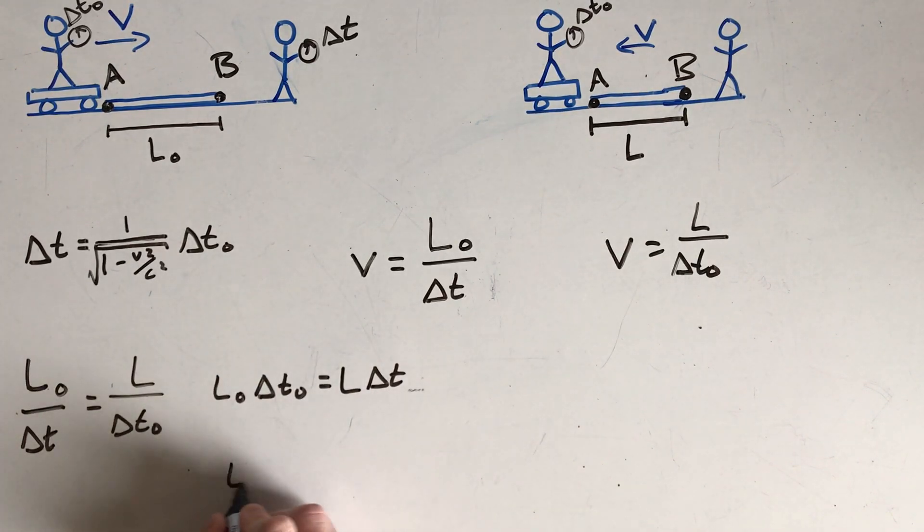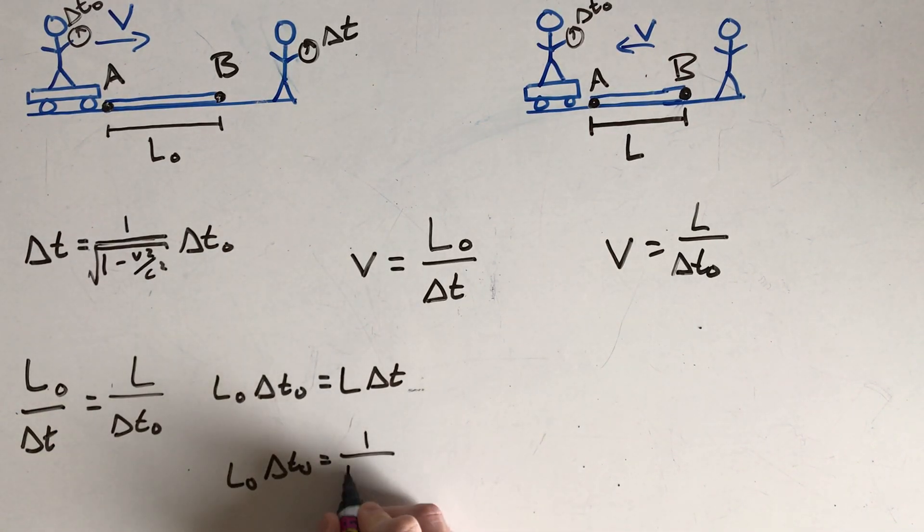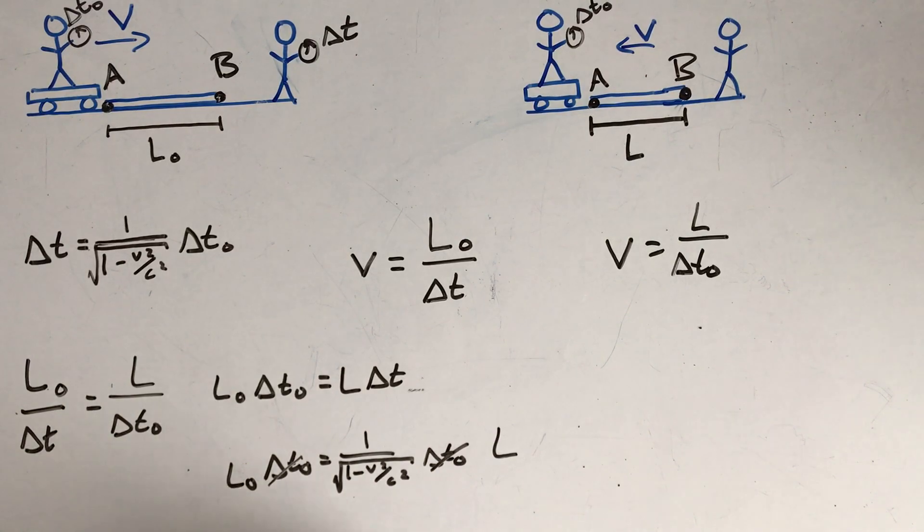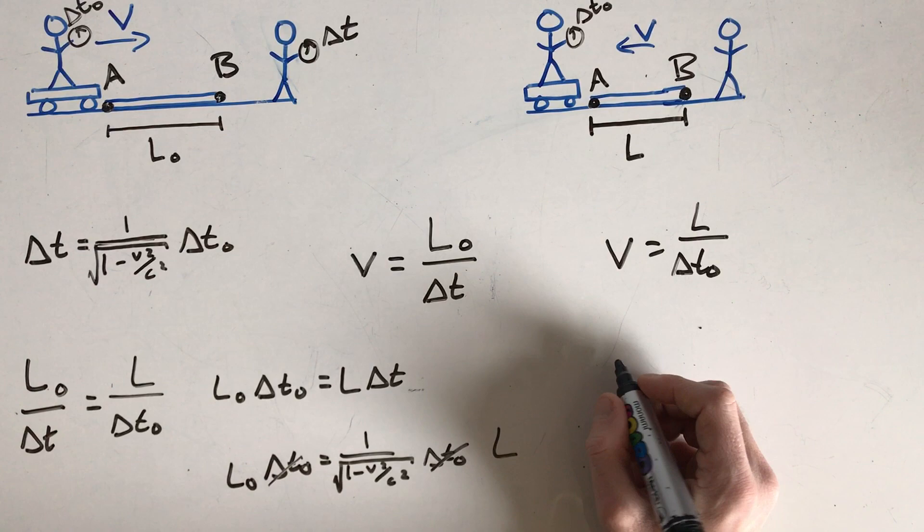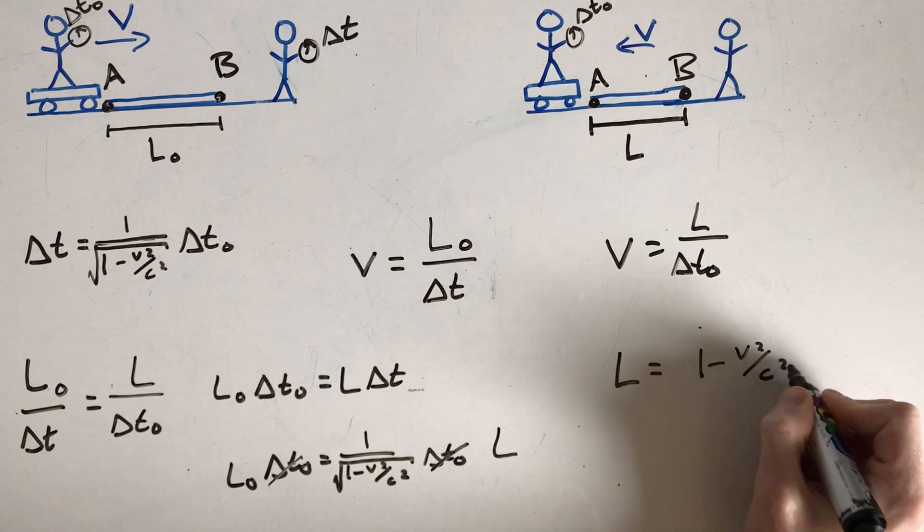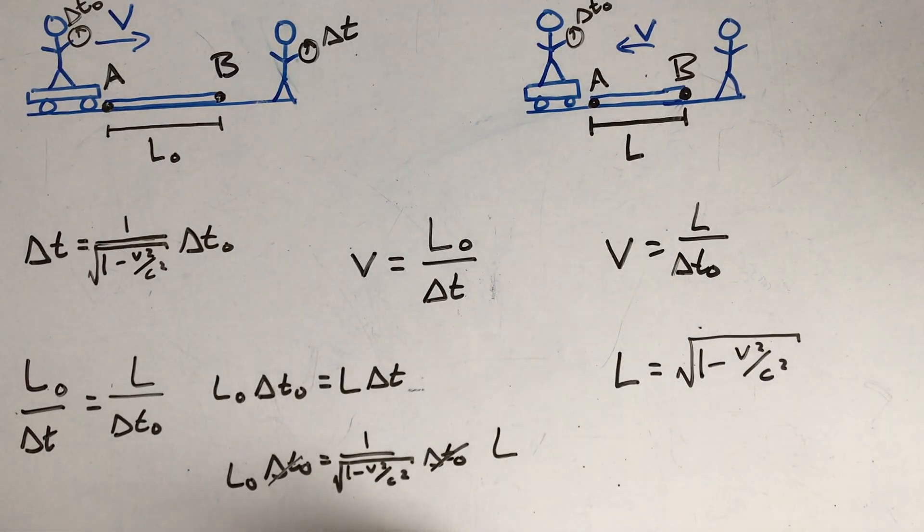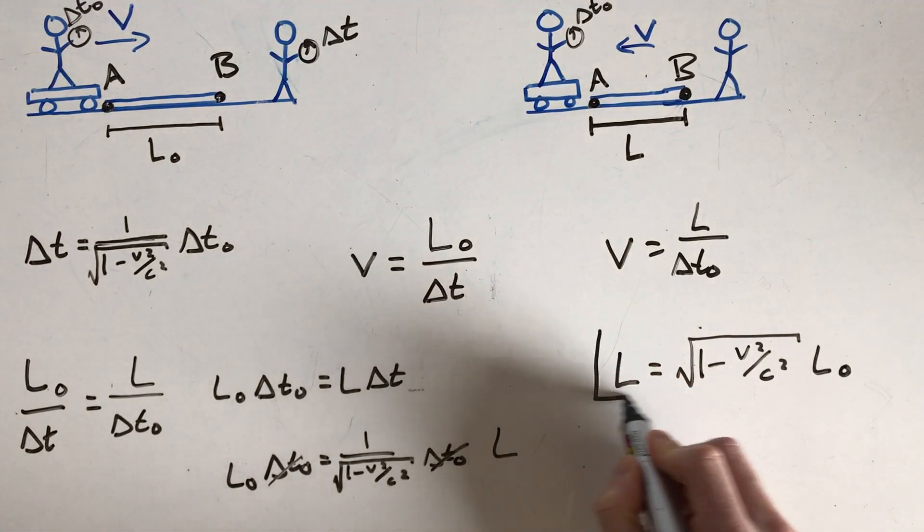And we know that L, or we know that delta T is equal to this, 1 over square root of 1 minus V squared over C squared, delta T naught. Delta T naughts actually cancel. So if we solve for L as a function of L naught, we actually get L equals square root of 1 minus V squared over C squared times L naught. Here's our equation for length contraction.